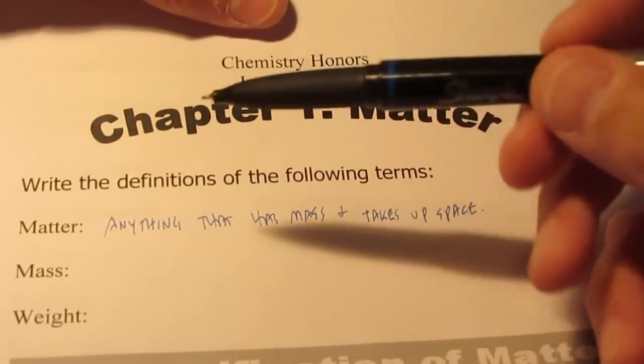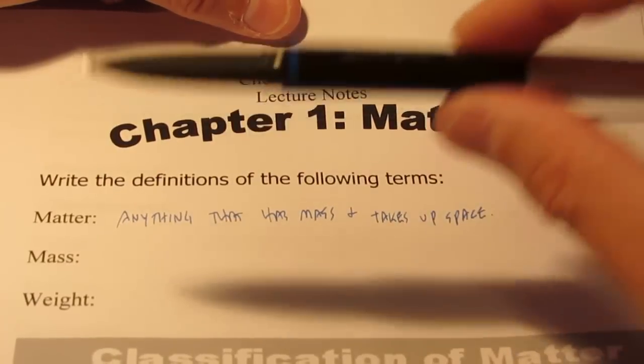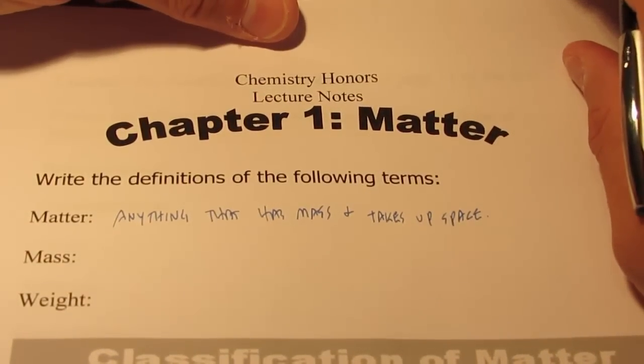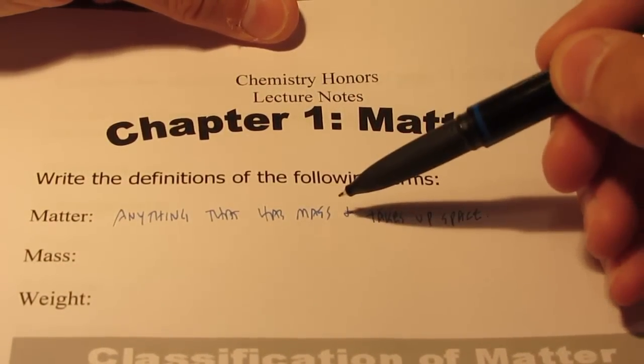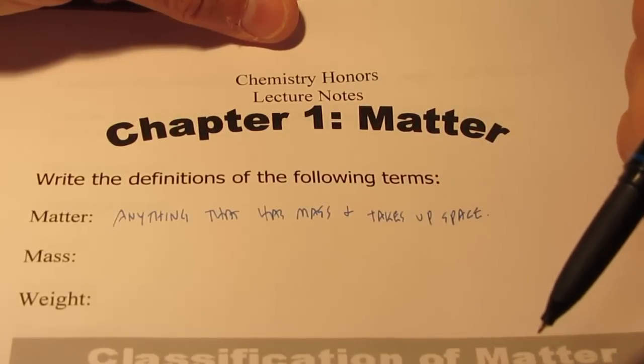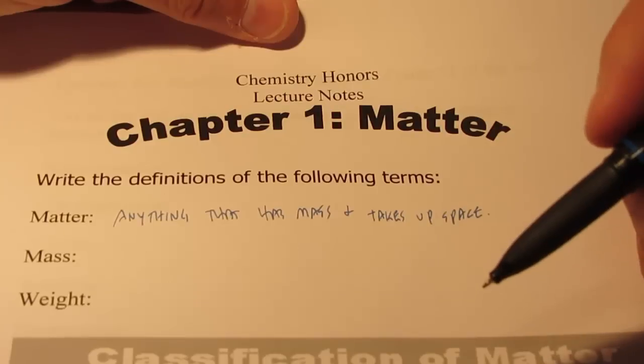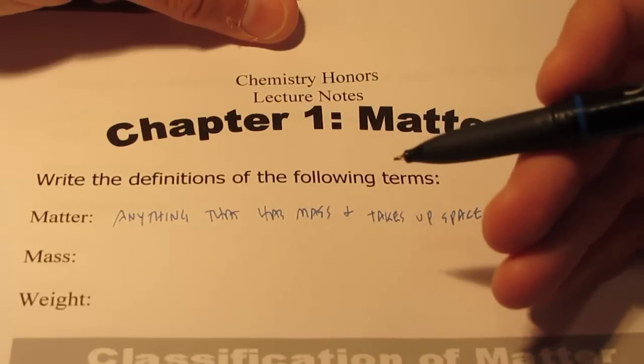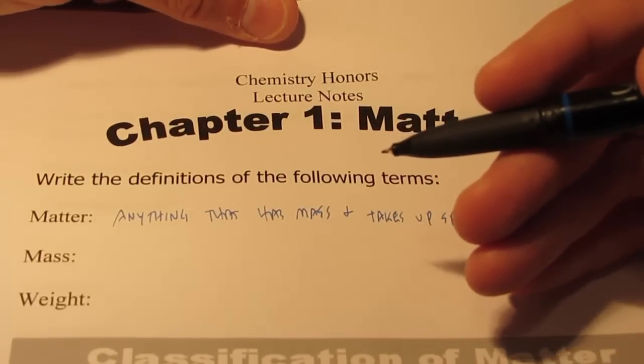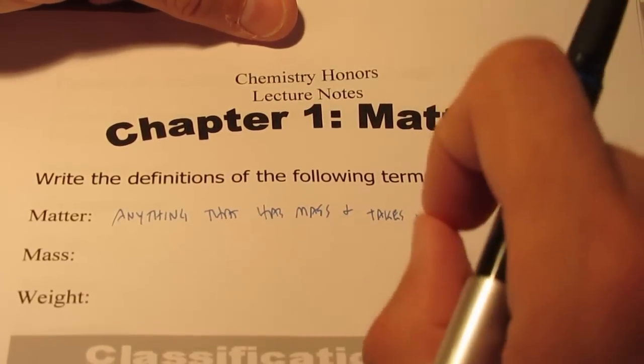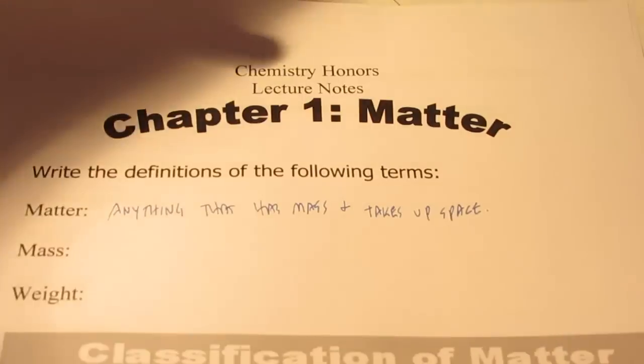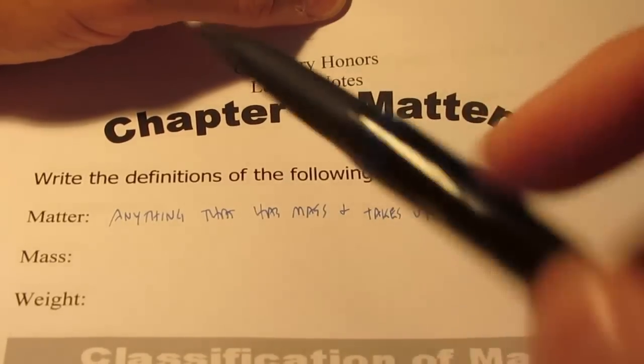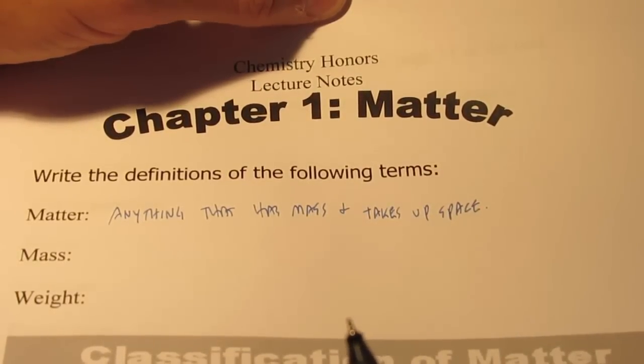So what would that include? Well obviously it would include this pen, wouldn't it? This pen has mass and it obviously takes up some space. Would it also include the air that you breathe? Does air have mass? We've heard of balloons that are filled with a gas that's lighter than air. So obviously relative to that gas, air must have mass and it does take up space. So certainly gases would be considered matter. Solids would be considered matter. A glass of water would be considered matter.